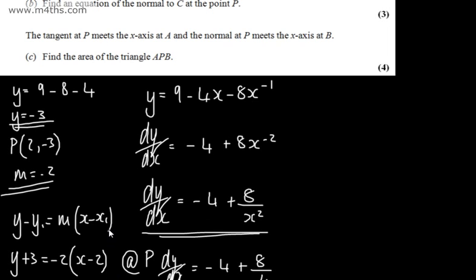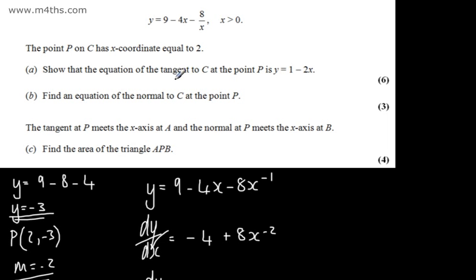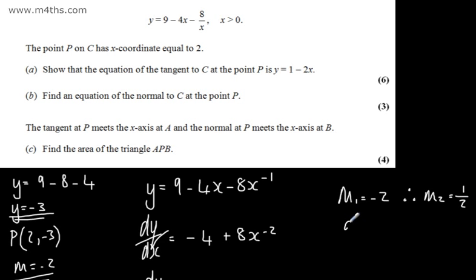That completes part A for 6 marks. For part B, we need to find an equation of the normal to C at point P. For the normal, m₁, the gradient of the tangent, is negative 2. Therefore m₂, the gradient of the normal, is positive one half, since m₁ times m₂ equals negative 1 for perpendicular lines. The normal is perpendicular to the tangent.